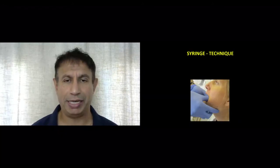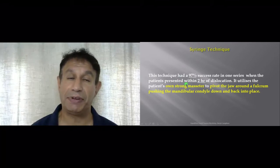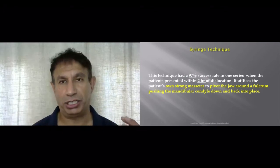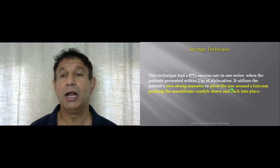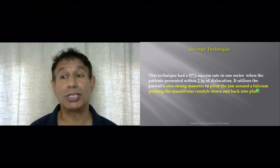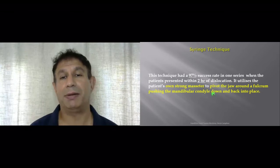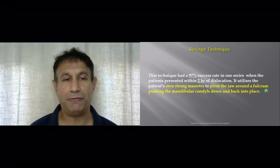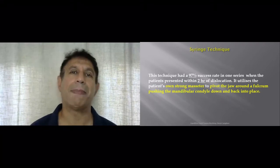Now let us look at the syringe technique. In some studies it has been shown to have up to 97% success rate if done within two hours of the dislocation. The technique utilizes the patient's very strong masseter muscle as a pivot, using the syringe as a fulcrum to push the mandibular condyle downwards below the articular eminence and back into place through a pivoting action.